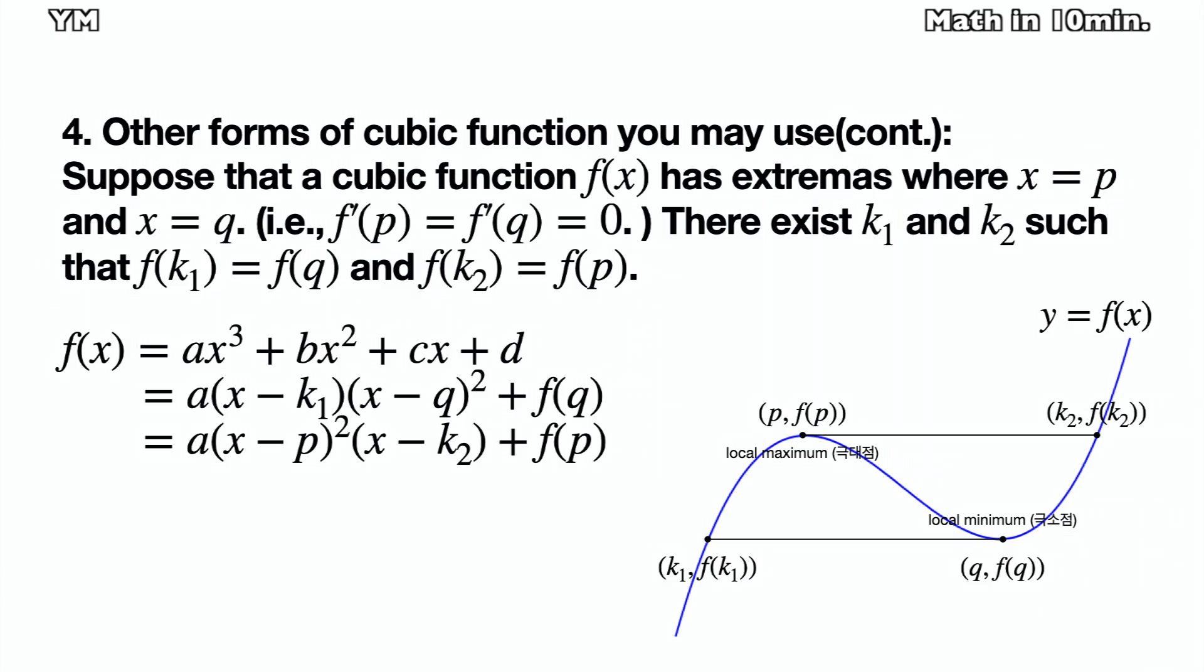In cubic function f having extremas, there exist points that have the same f values as extremas. Let me define them as k1, f(k1), and k2, f(k2), such that f(k1) is equal to f(q) and f(k2) is equal to f(p). Then we can change f(x) by using k1 and q, or using k2 and p, like the equations on the left side.